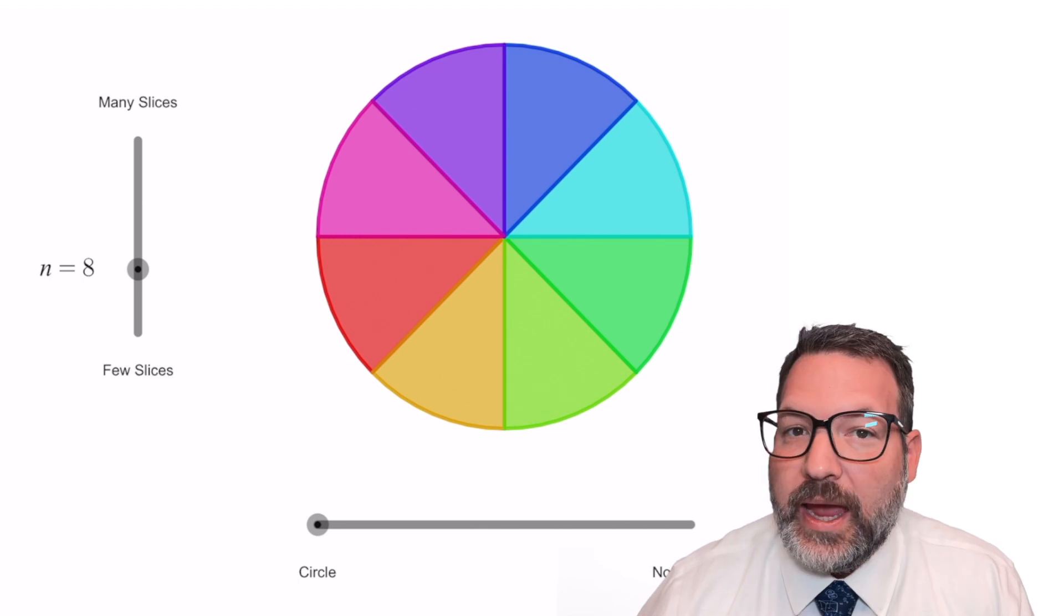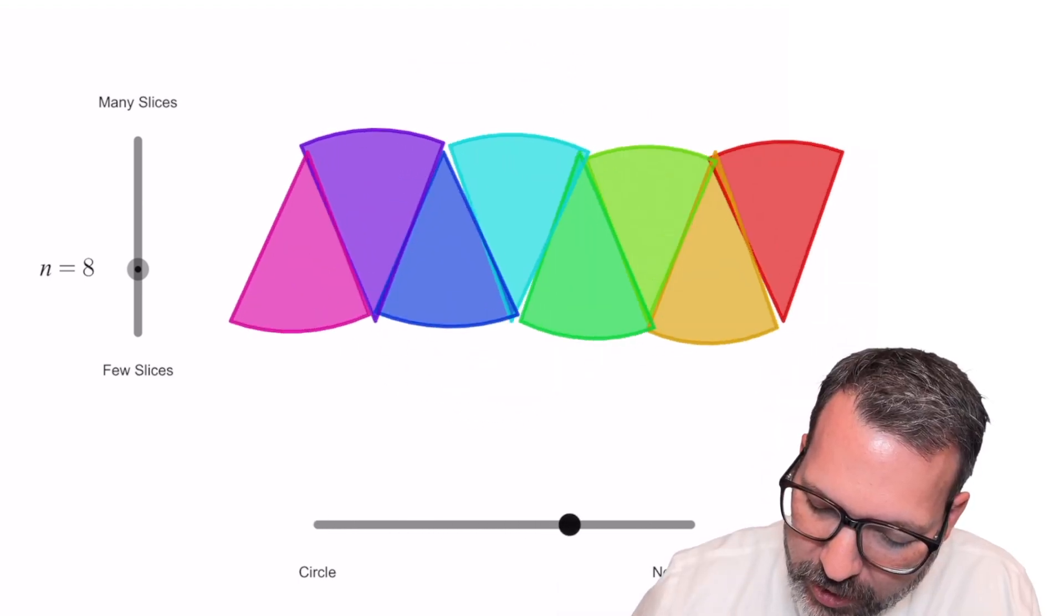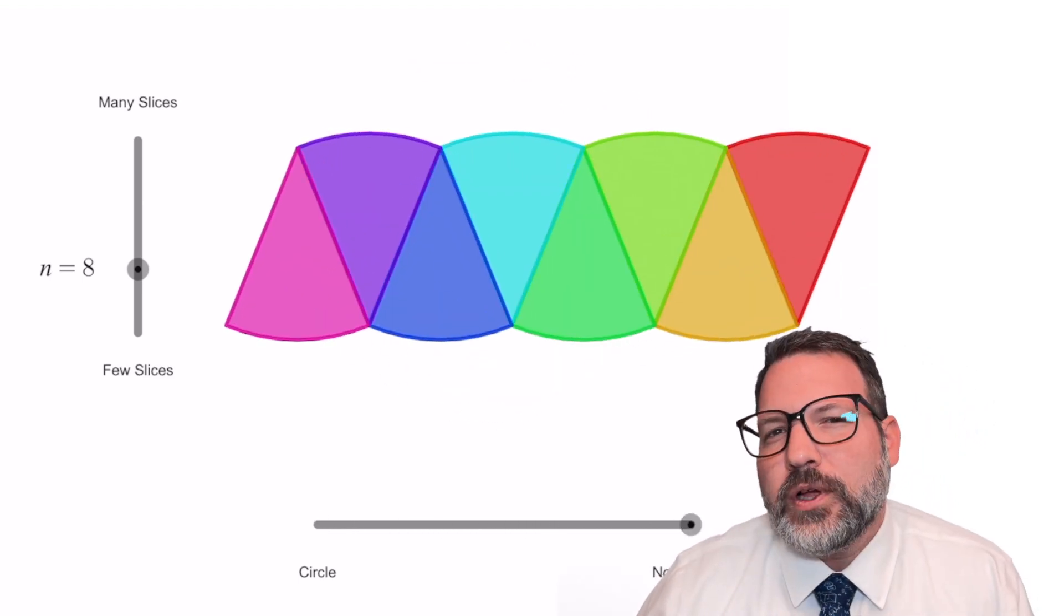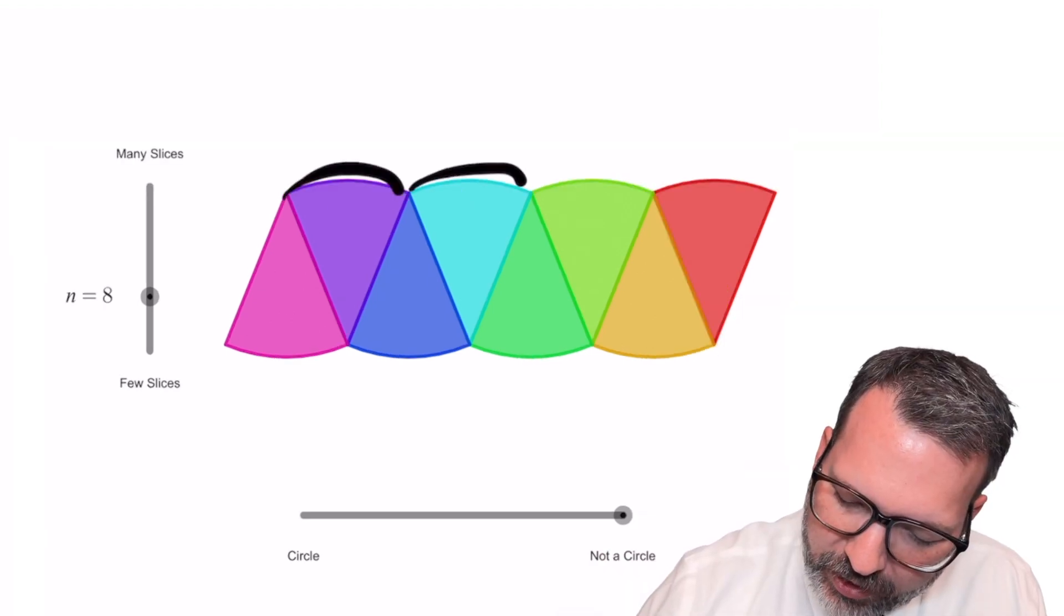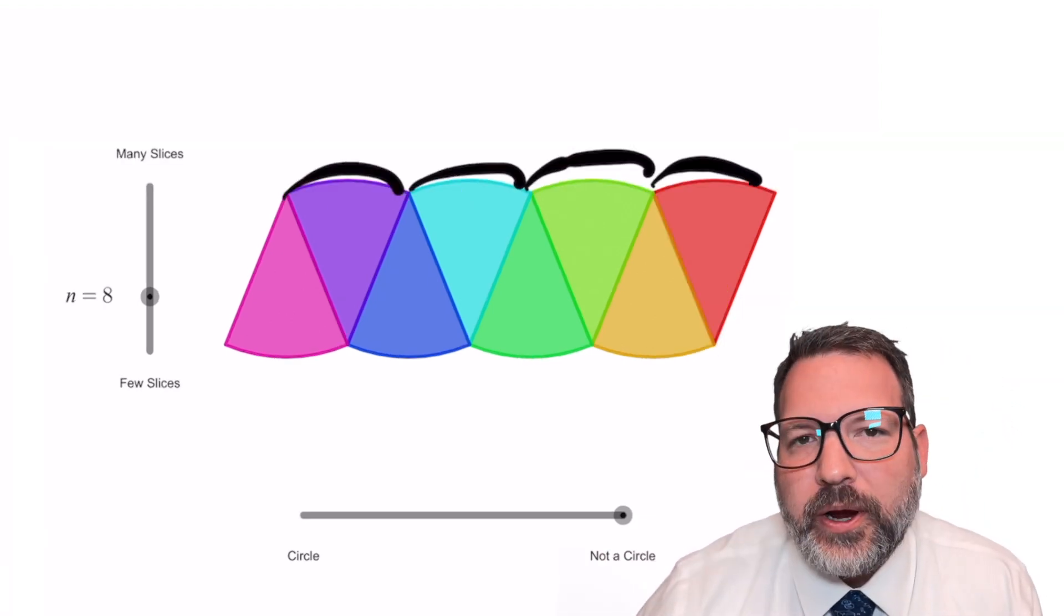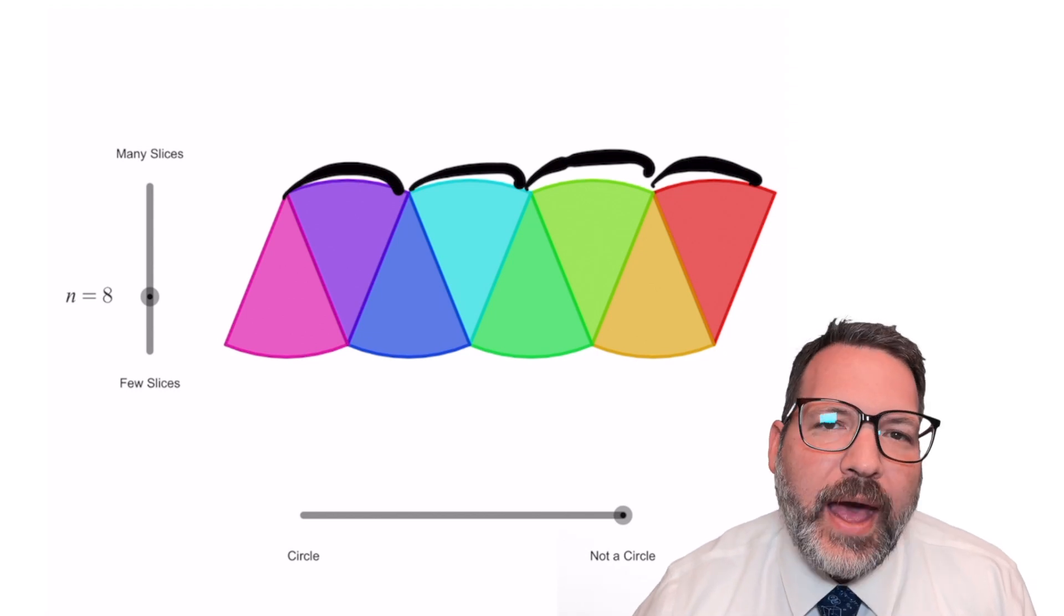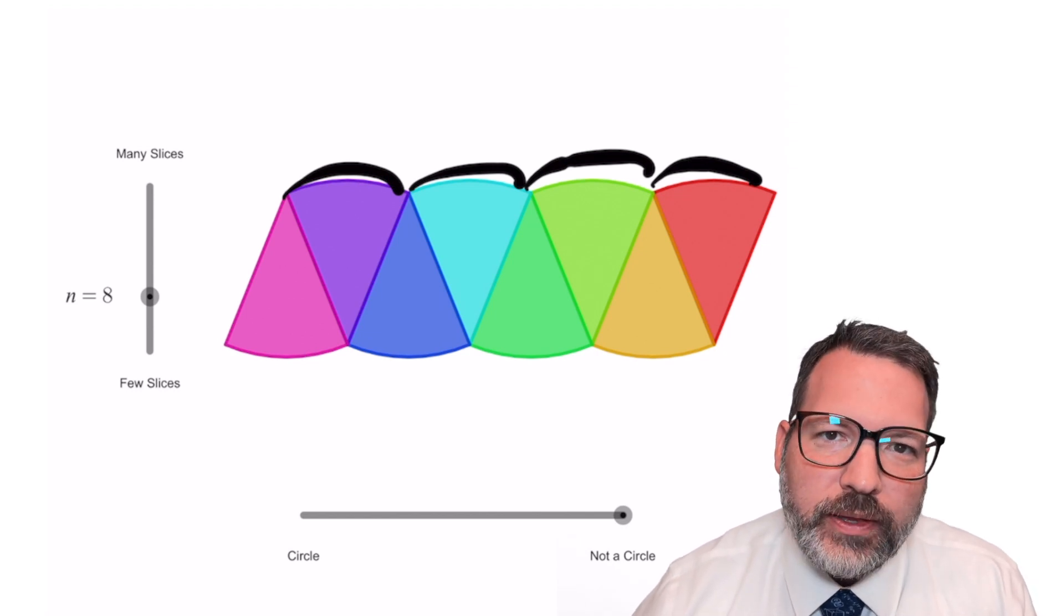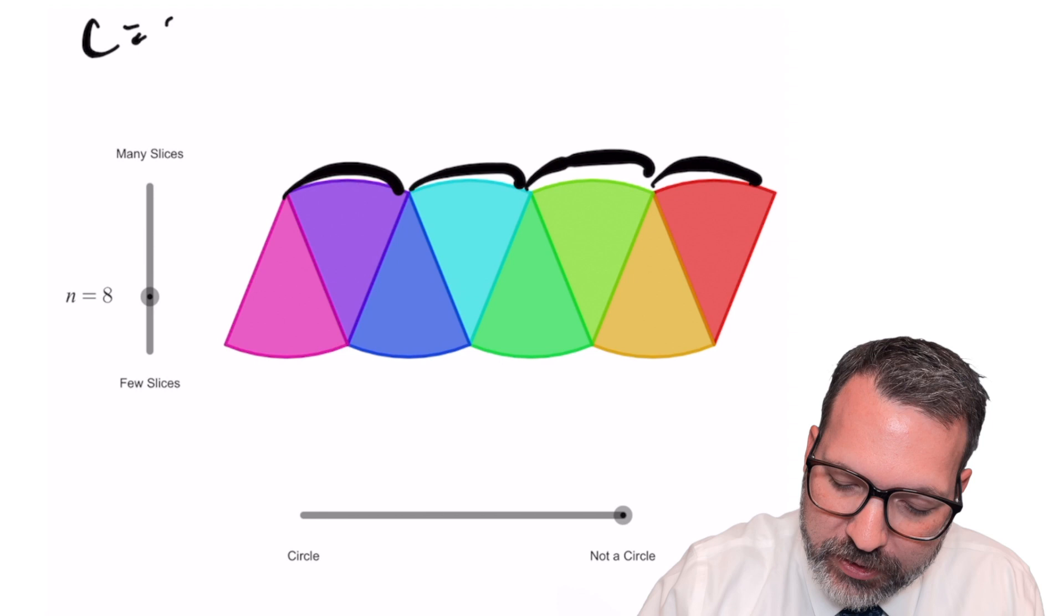We're going to split the circle up into eight pieces and rearrange those pieces so that they kind of look like a parallelogram. The trick is that the top and the bottom of this parallelogram each represent half of the edge of the circle. That is, half of the total circumference of the circle.